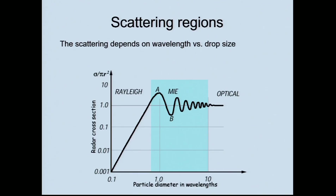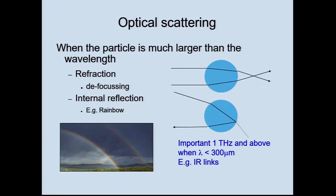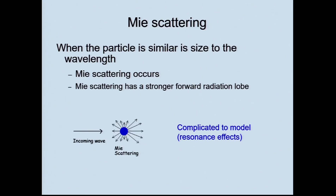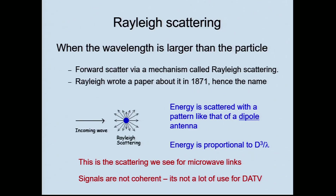A little bit about scattering. There are three types: Rayleigh, Mie, and optical scattering, depending on the size of the particle relative to the wavelength. Optical scattering — like a rainbow — is important above the terahertz range, relevant for infrared links and optical comms. Mie scattering is when the particle is similar in size to the wavelength — a typical raindrop is maybe a couple of millimetres, so that's really up in the 50 to 60 gigahertz range and above. Then there's Rayleigh scattering, which happens when the wavelength is significantly larger than the particle — that's mostly what we get. It's scattered in the form of a dipole antenna, and the amount of scattering is proportional to the diameter of the particle cubed, divided by the wavelength.